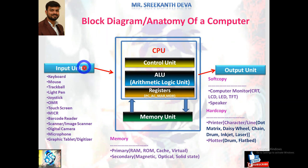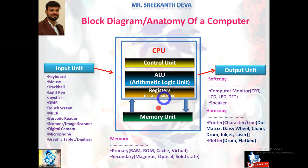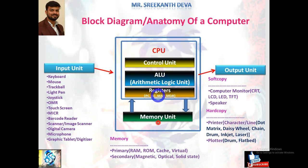Once data and instructions are passed via an input device, they move to the CPU — the central processing unit. The CPU consists of a control unit, an ALU (arithmetic logical unit), and registers. Registers include process registers like program counters, accumulators, memory address registers, and memory data registers. The CPU is interlinked with the memory unit.